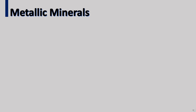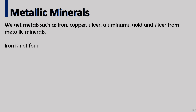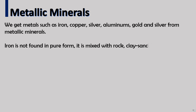We get metals such as iron, copper, silver, aluminium, and gold from metallic minerals. Iron is not found in pure form — it is mixed with rock and clay sand. This is called iron ore.